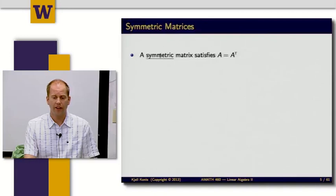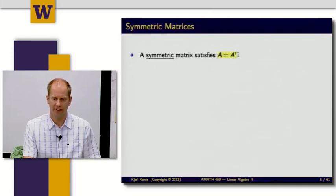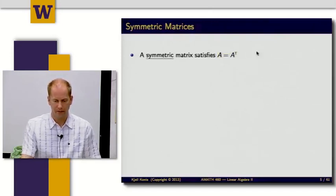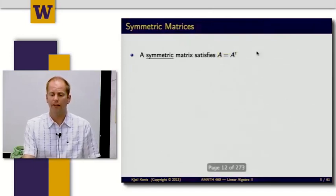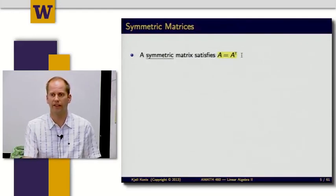We can use the transpose operation to define a symmetric matrix. A matrix A is symmetric if it satisfies A equals A transpose. First of all, this only works if A is a square matrix, because the only way A can equal A transpose is if M equals N, so that when I transpose it, it's still an N by N matrix.